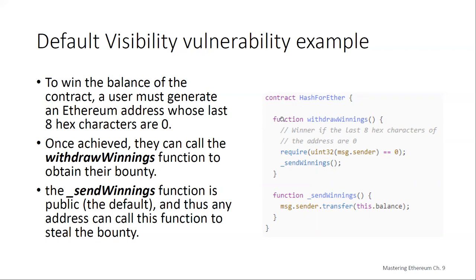We've got the contract HashForEther with a function withdrawWinnings. You are the winner if your address's last eight characters are zero. The code takes msg.sender — the address of whoever calls the withdrawWinnings function — and casts it to an unsigned integer of 32 bits. A hex character is four bits, so eight hex characters equals a 32-bit unsigned integer. Since Ethereum addresses are larger than 32 bits, the explicit cast cuts off all the leading characters, leaving only the last eight. We check that those last eight hex characters equal zero.